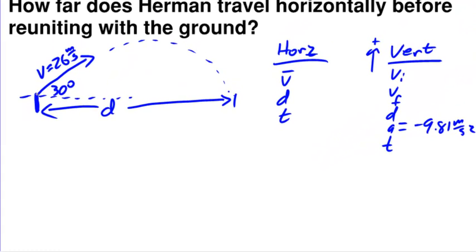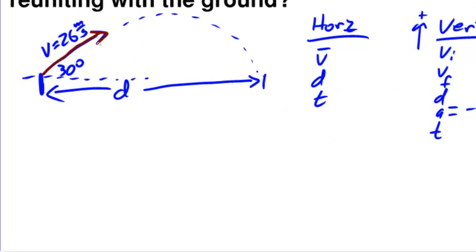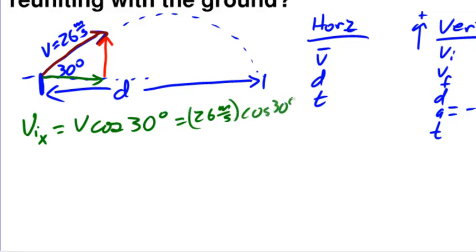But what we do know is his initial velocity vector, 26 meters per second at an angle of 30 degrees. We can break that up into horizontal components, the initial velocity in the x direction there in green, and vertical components, his initial velocity in the y direction there in red. In the x direction, his initial velocity VI x is going to be 26 meters per second times the cosine of 30 degrees when we use SOHCAHTOA. That's going to be 26 meters per second times cosine 30 degrees, and I get that his initial velocity in the x direction is going to be about 22.5 meters per second.